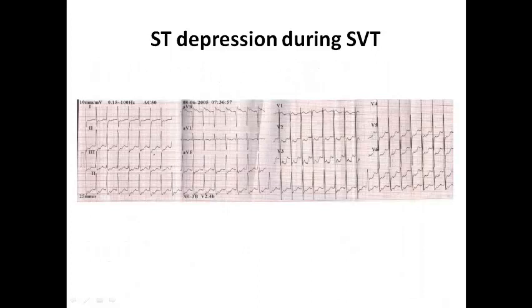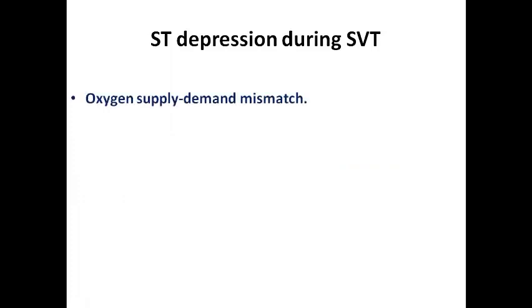In this second example we also see regular narrow complex tachycardia suggestive of SVT, with significant ST depression of about 2 or 3 mm in chest leads from V2 to V6 plus inferolateral leads, and also 1 mm ST elevation in AVR. This is a remarkable sign that we cannot ignore. We need to understand what can cause ST depression during SVT.